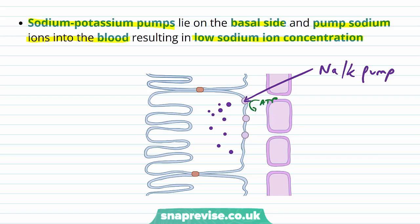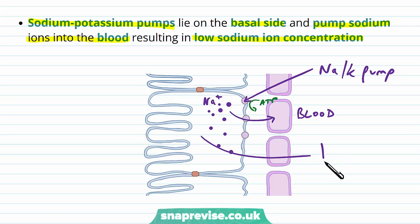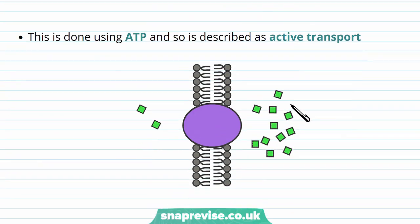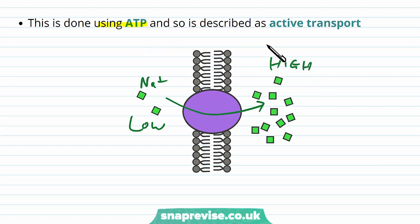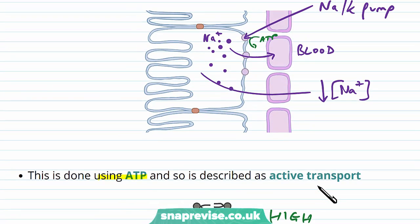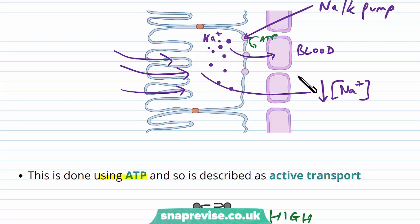The sodium-potassium pump uses active transport and ATP to send sodium ions from inside the cell, where there is less of it, to outside the cell, where there is more — into the blood. This lowers the sodium concentration inside the cell. Sodium in the tubule then moves down its concentration gradient into the cell, and carries on into the blood. So the proximal tubule allows reabsorption of sodium from the tubule into the cell, where it is drawn through into the blood.